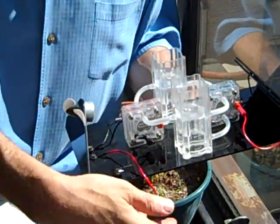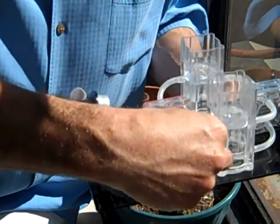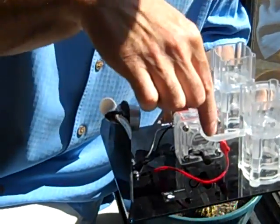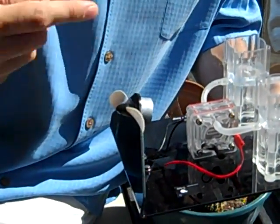When the sun goes down at night, you can connect this. This is the fuel cell, and it takes the hydrogen and oxygen and runs the propeller.